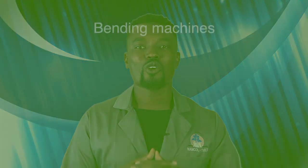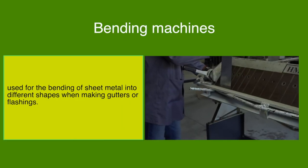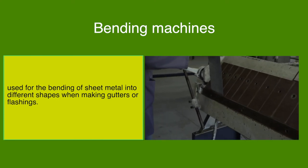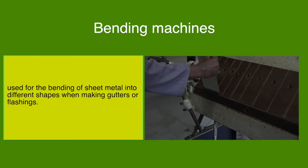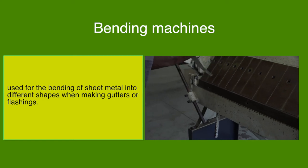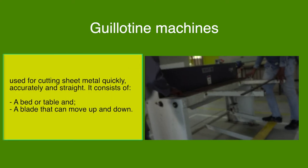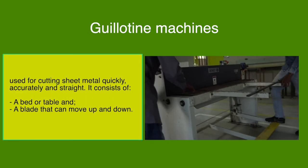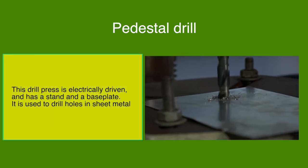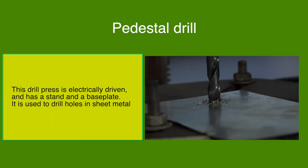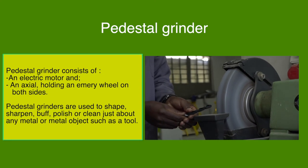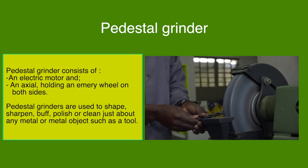We have come to the end of our program. Let's have a look at what we have learned. You can already see different machines here in the workshop and you can see how they are being operated. These are: sheet bending machine, rolling machine, guillotine machine, pedestal drill machine, and pedestal grinding machine. From me, until next time, see you.